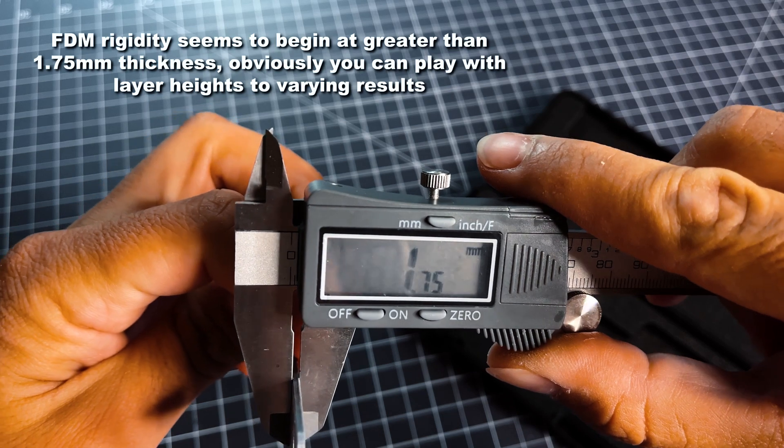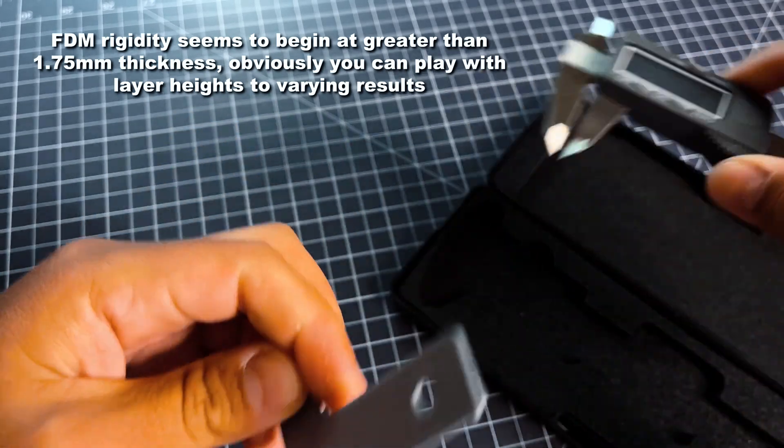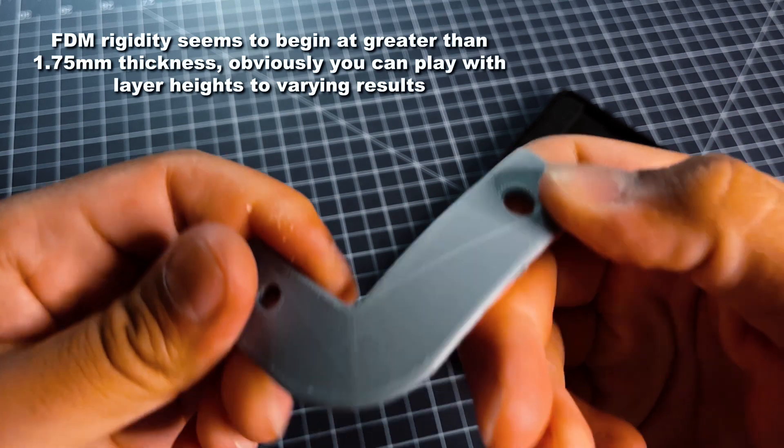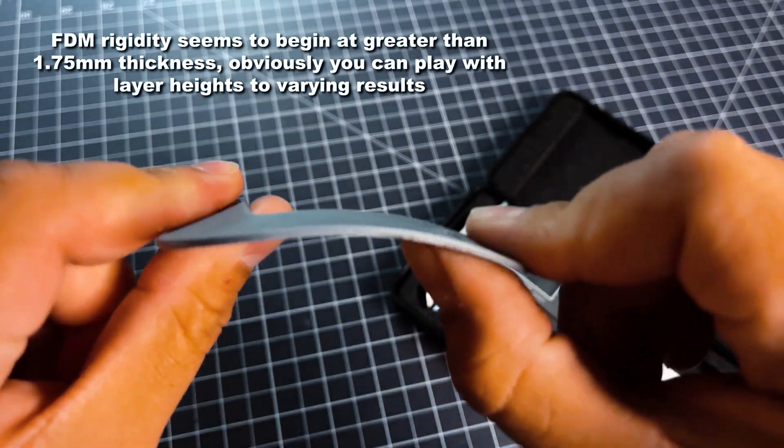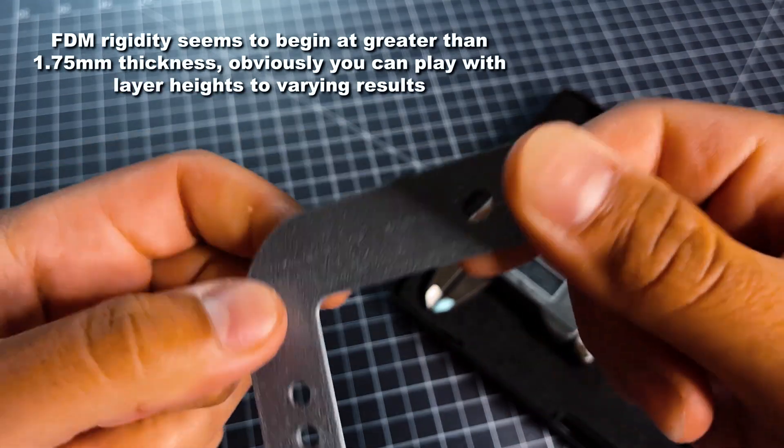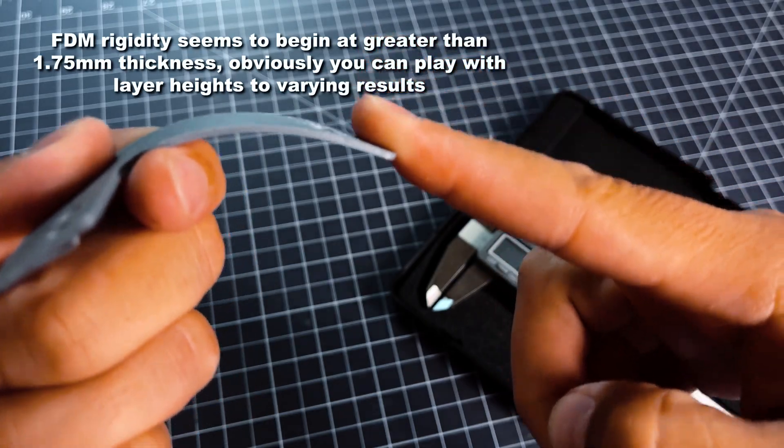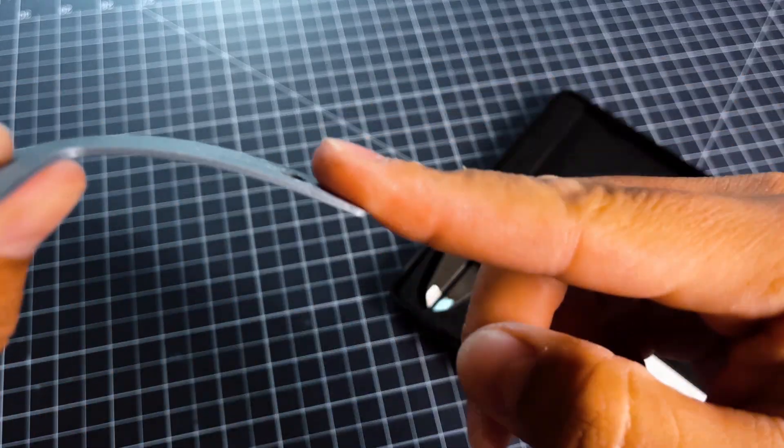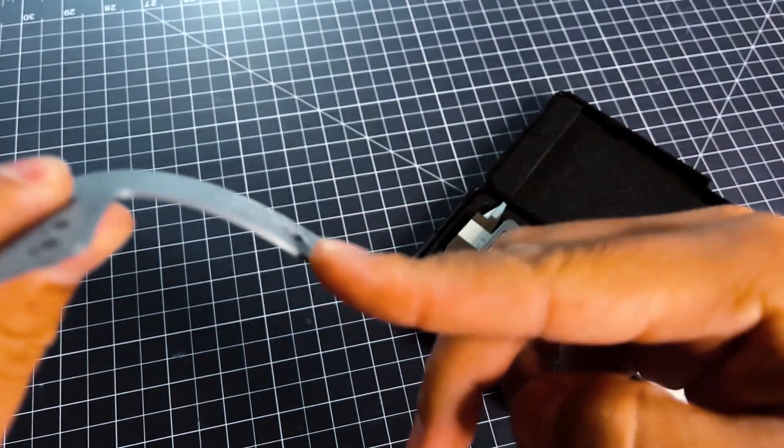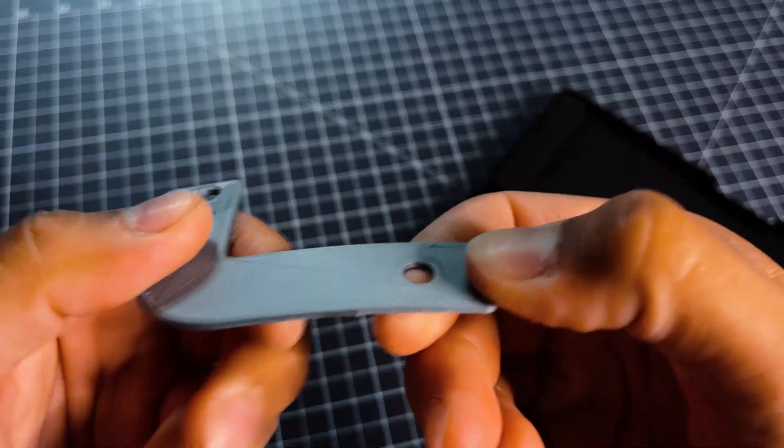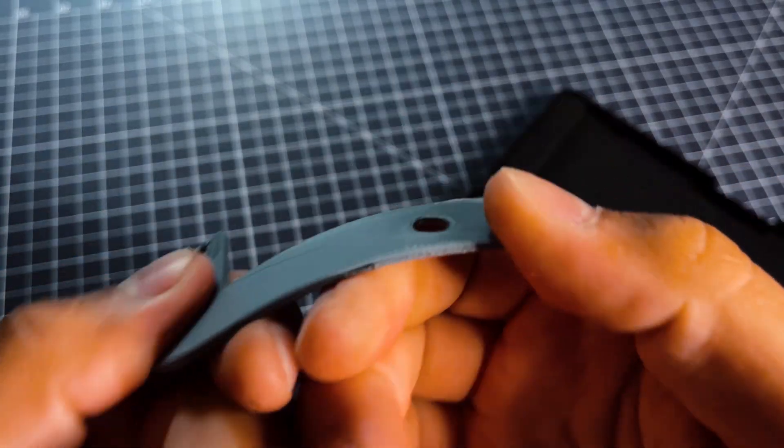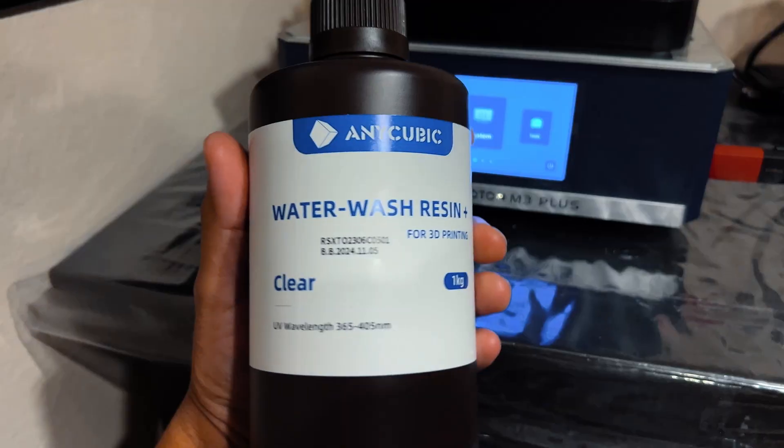Now I want to touch on this because at 1.75 millimeters in an FDM part, that's where you start to get the rigidity and structure that maybe we were looking for in a part like this, or at least the very bare minimum. You can see how much it springs back pretty quickly and rebounds. So 1.75 millimeters, it seems like in the FDM world, is the thickness where you start to see some of that structure.